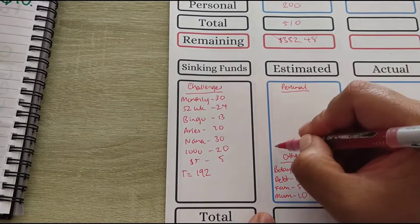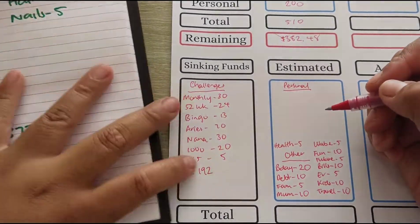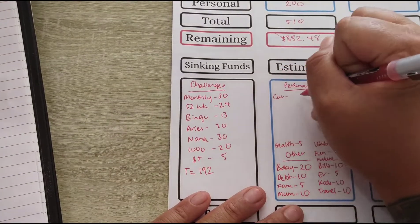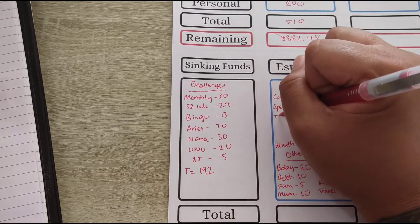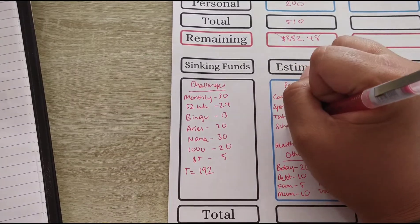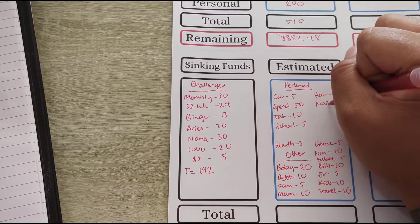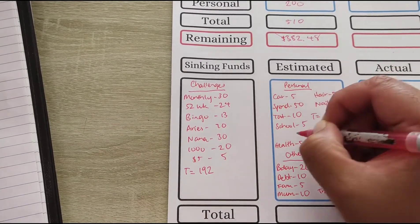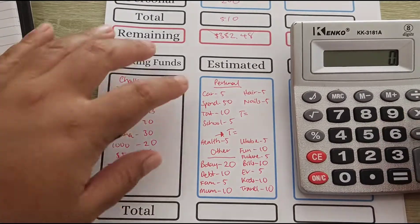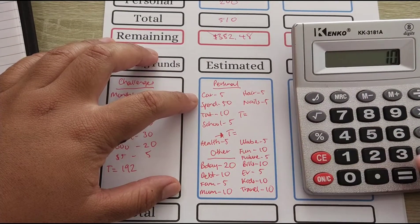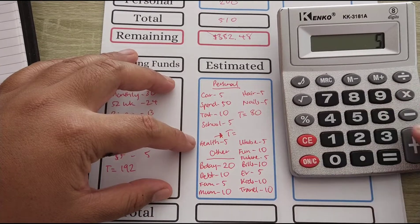Wow, that's quite a lot. I'm just going to add one more over here, which is health, and that's going to get $5. Okay, for the personal binder, we've got car, that's going to get $5. Spend is going to get $50. Tat is going to get $10. School is going to get $5. Hair, $5. Nails, $5. Okay, so the total of that amount, that looks so messy. So I turn it over, personal. That's $18. And then our other binder.